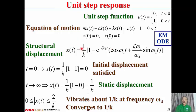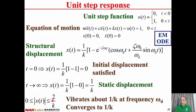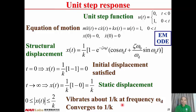Since e^(−ζω₀t) is always less than one, the bracketed term ranges between −1 and 1. Therefore the absolute value of X(t) lies between 0 and 2/K. The structure vibrates about the static displacement 1/K at the damped natural frequency ωD. As time goes by, the displacement converges to 1/K, since when T tends to infinity X(t) → 1/K.